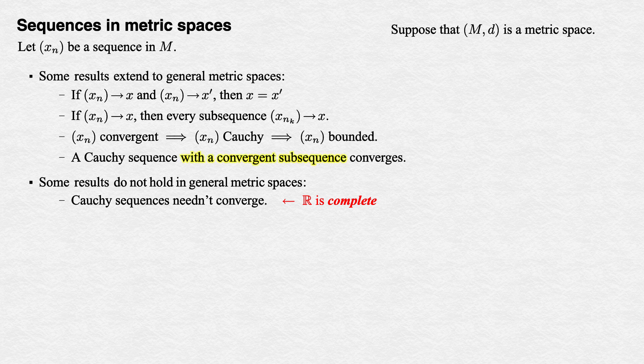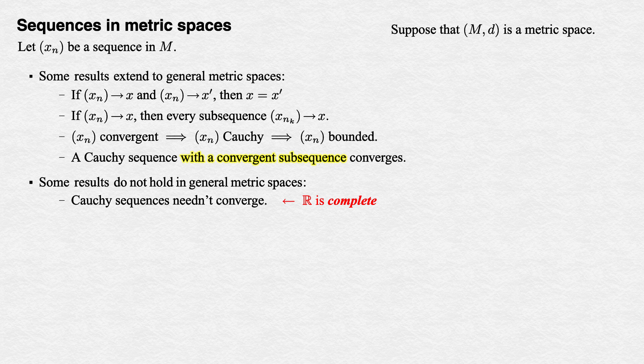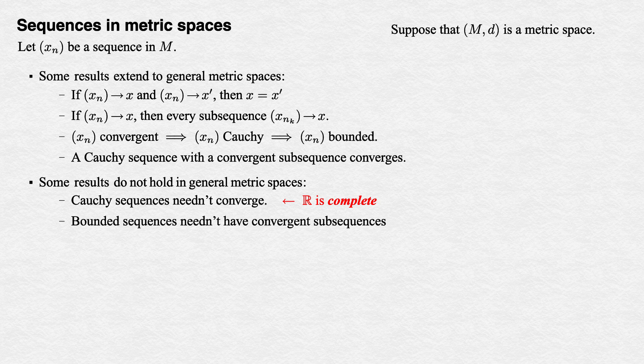Note that in our fourth good result above, we're supposing the existence of a convergent subsequence. This gives you the limit that you need, which is how the proof can still work. Boundedness isn't what it used to be for sequences either.